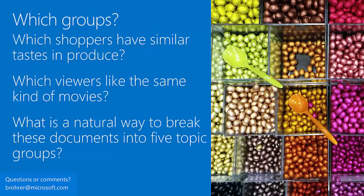The third question is: which groups does the data naturally break down into? Imagine someone gives you a bag of M&Ms and says, 'Break this into groups that are similar.' You'd probably start by color, but you could also do it by weight, diameter, or sugar content. Common examples: which shoppers have similar taste in produce? Or — if you've watched movies streaming online — the movie recommendations you receive are the result of an algorithm asking, 'Which viewers like the same kind of movies?' and then recommending movies your compatriots have seen that you haven't.